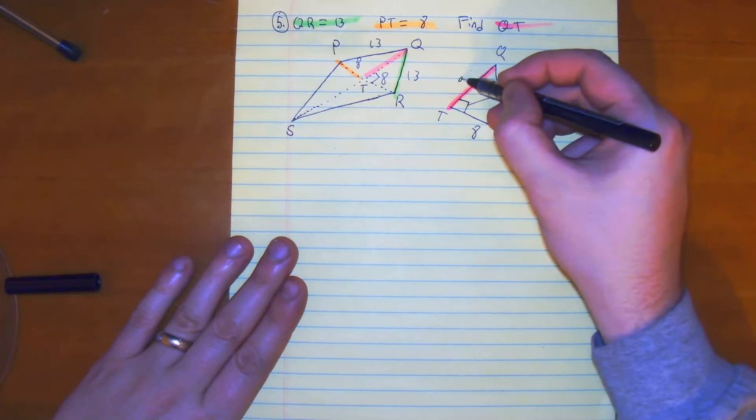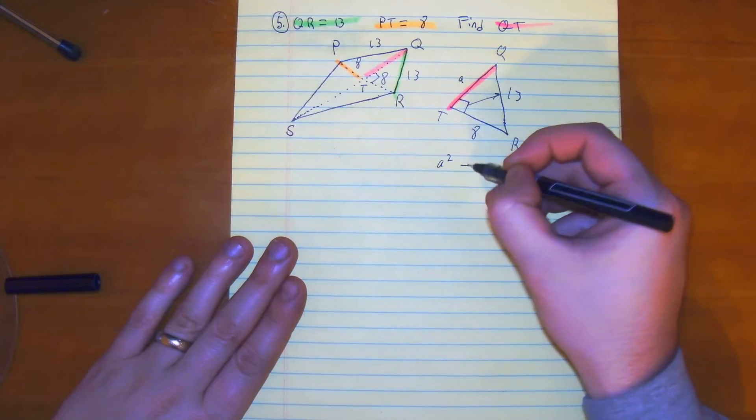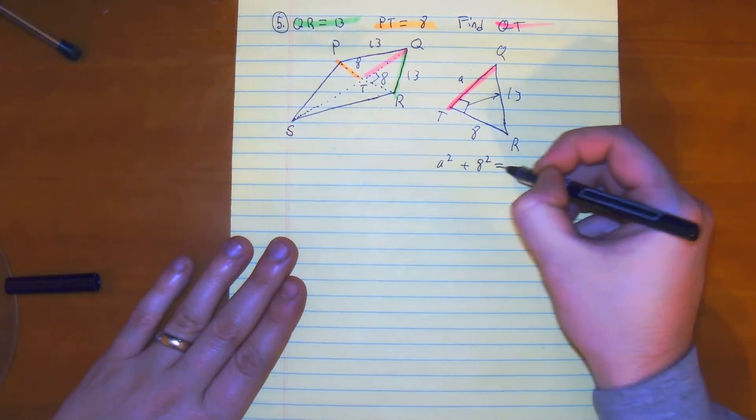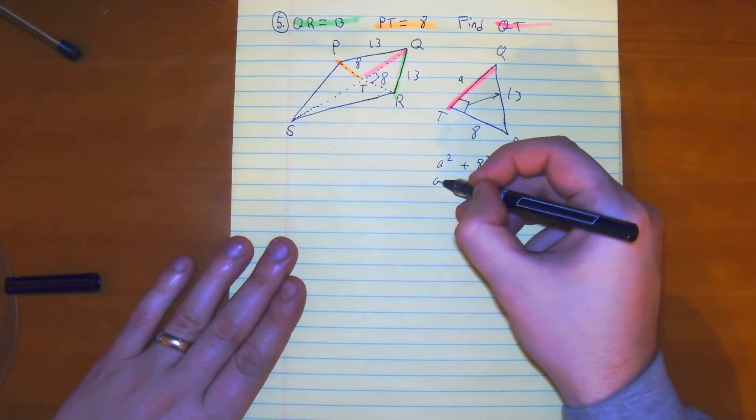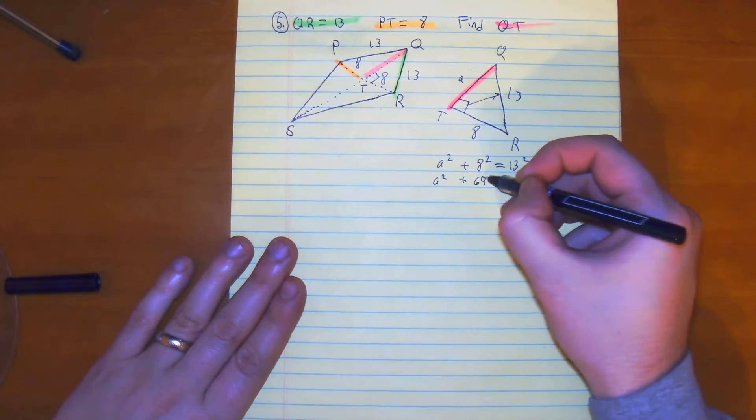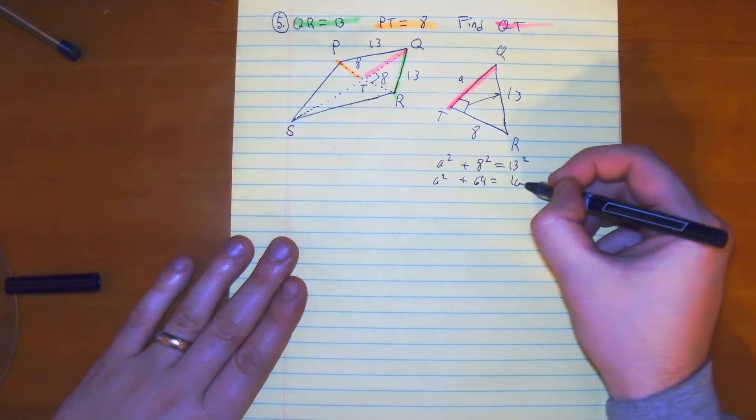We don't know what QT is, but we can just call that a. So we have a² + 8² = 13². We have a² + 64 = 169.